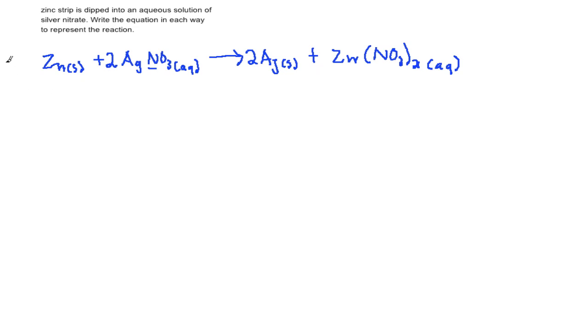So that was the very first step of writing or determining the net ionic equation. So the second step is any compound that's aqueous, we must convert that to its ions. So zinc, when it's in a solid state, will never become ions, so we leave zinc solid as is.